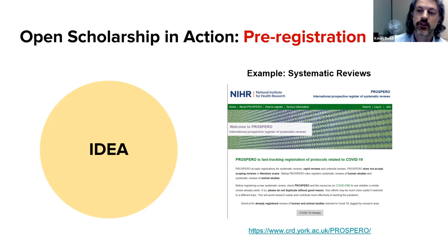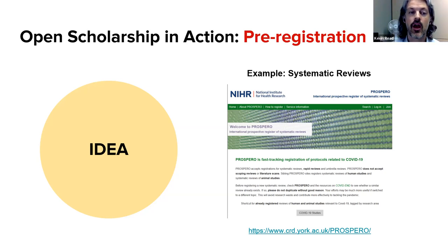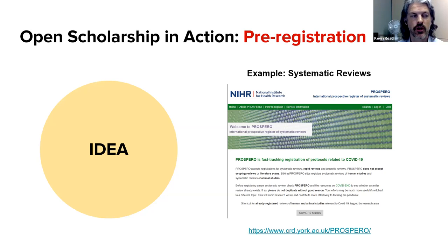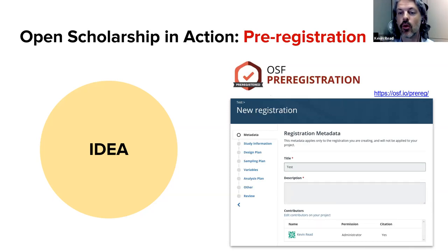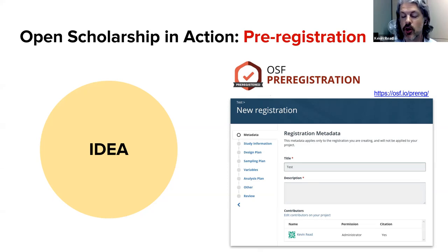This isn't a new idea — anyone who has done a systematic review knows that conducting one requires registering that review in the database called Prospero. This allows people to not reinvent the wheel and see what ongoing results are already happening. There's never been an issue with scooping or risk of theft in this environment. Many people are also sharing pre-registrations of their scoping reviews and realist reviews using the Open Science Framework, which I'll share a link to later.